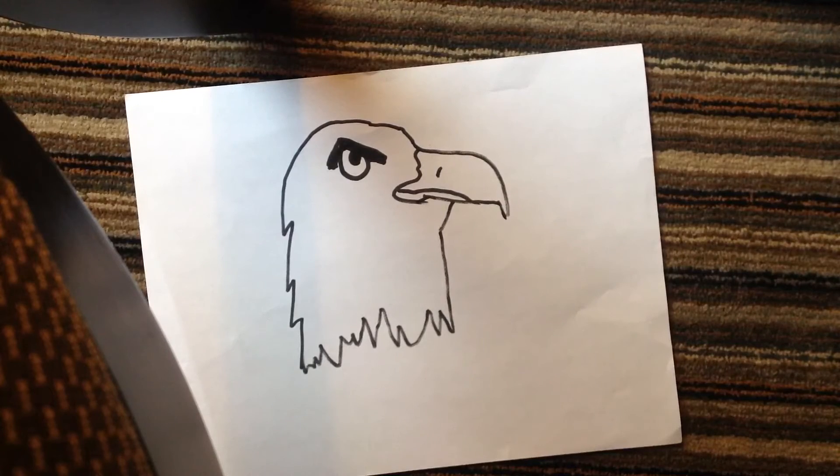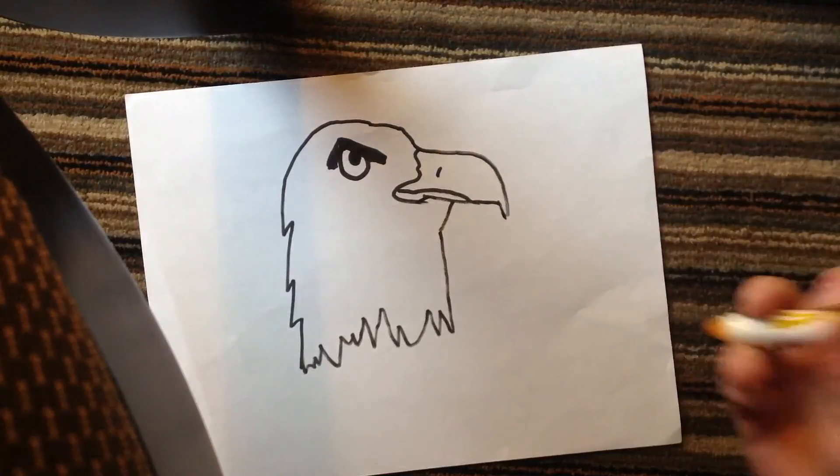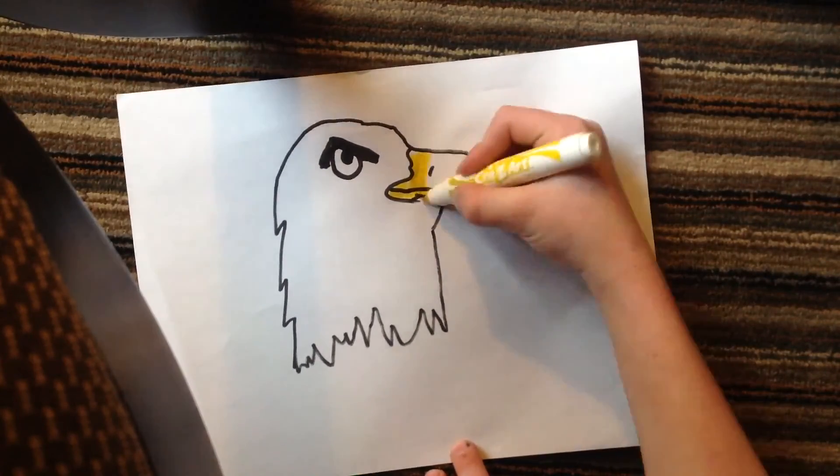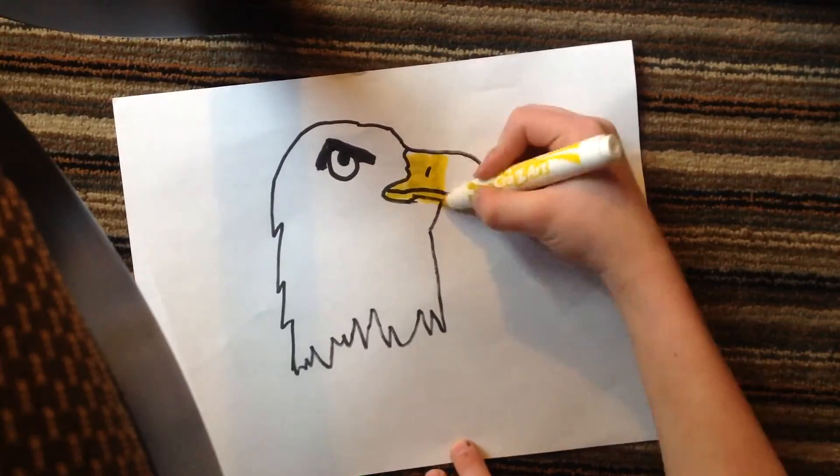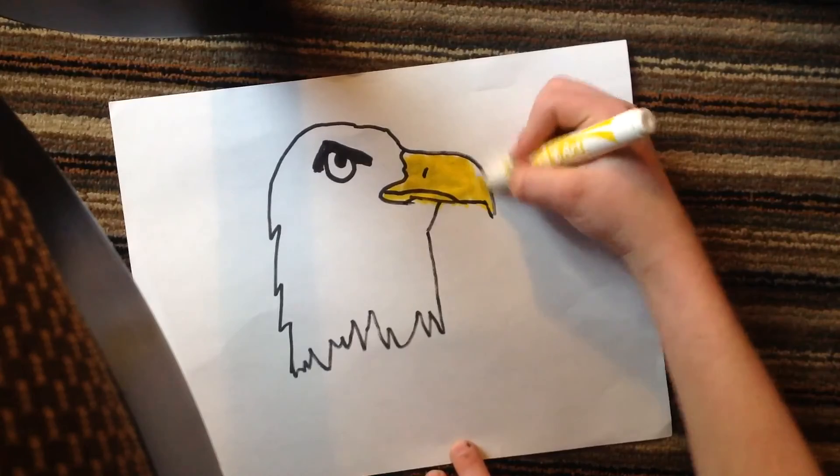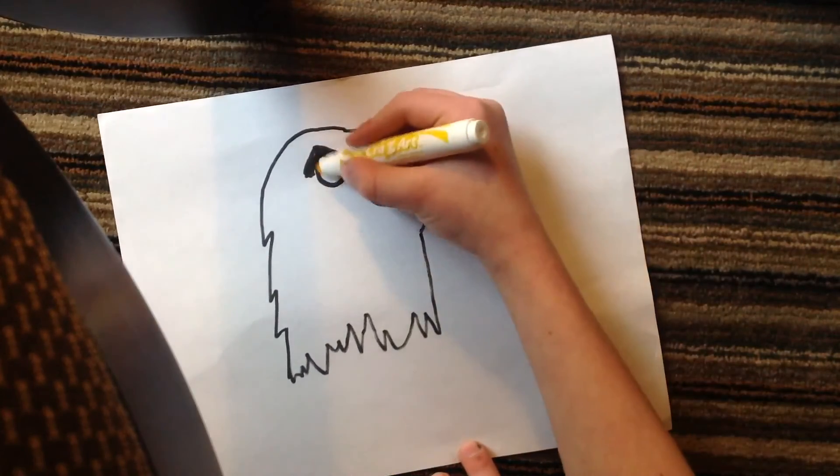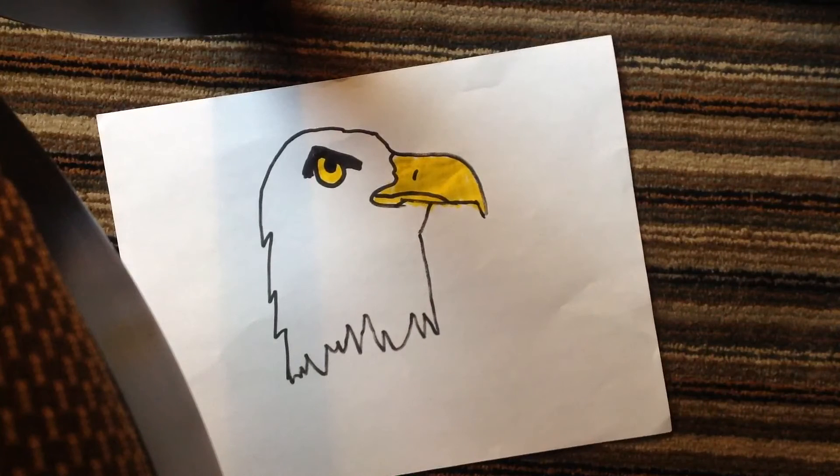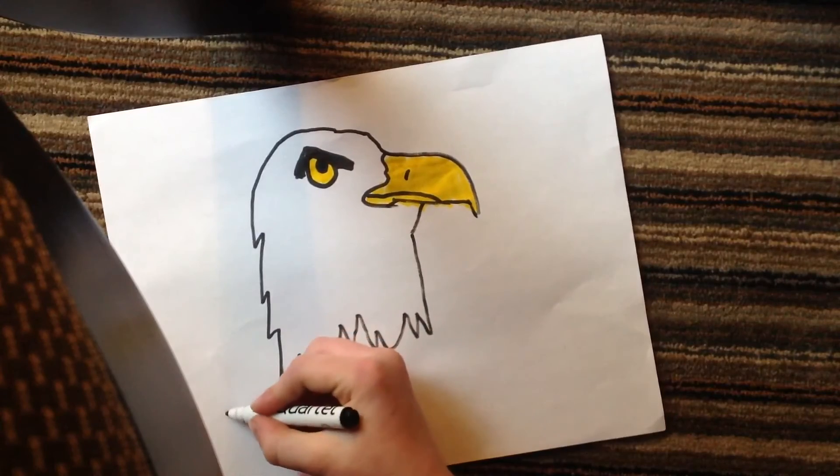Now all you have to do is take your yellow marker and just color in the beak. Beautiful little eagle beak. And then color in the eye. Make sure to color in the pupil too. And then what I like to do sometimes is draw like a word.